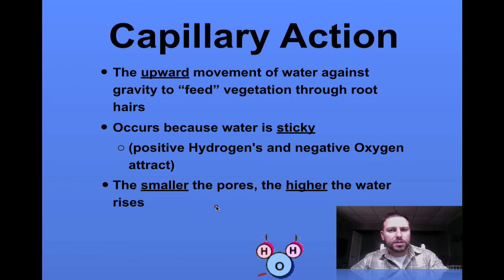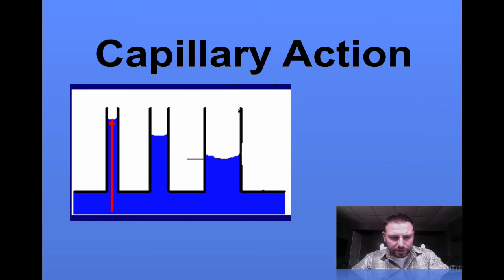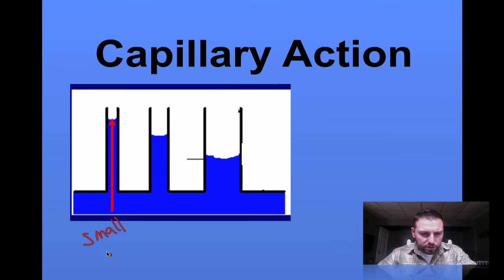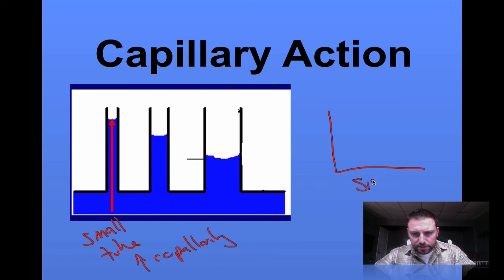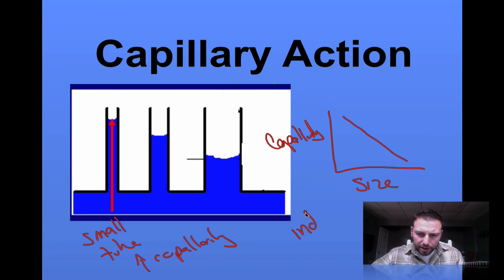Because of this, water sticks to the sides of the capillaries or those small tubes, but also sticks to itself, known as cohesion and adhesion. What we see is: the smaller the pores, the higher the water rises, or an increase in capillarity — just like we see in this diagram. Small tubes or pores increase capillarity. If we increase the size, we decrease capillarity. There is an indirect relationship between capillarity and pore size.